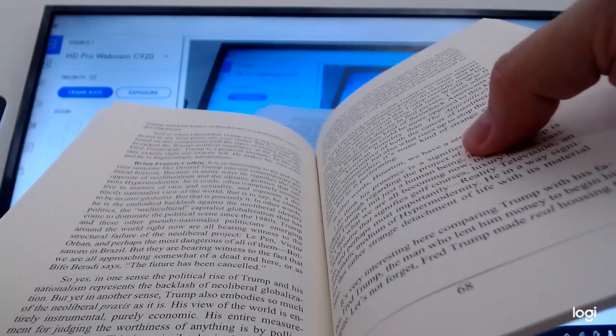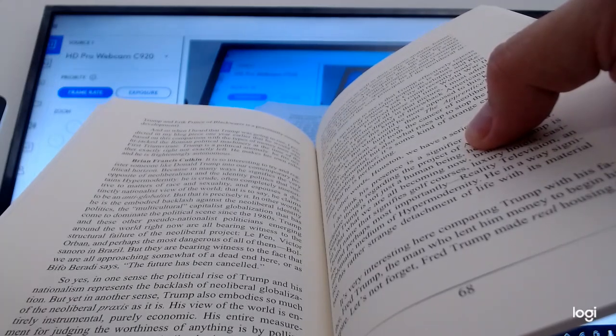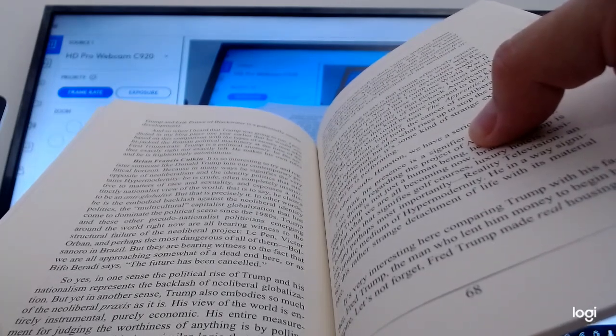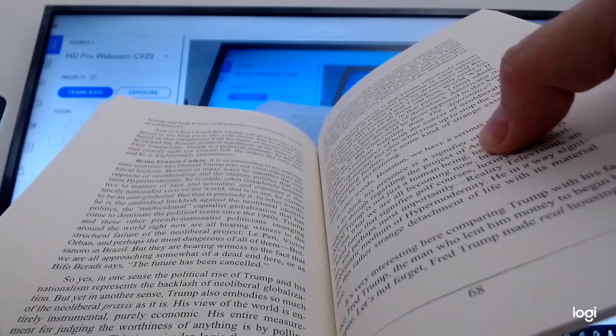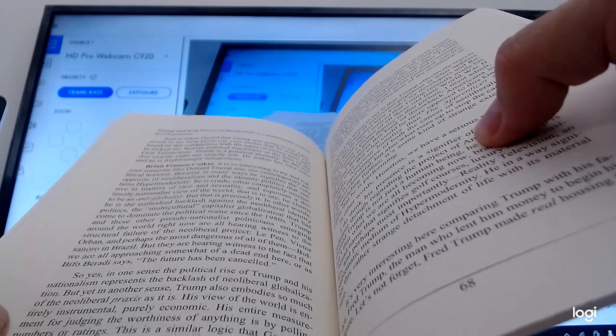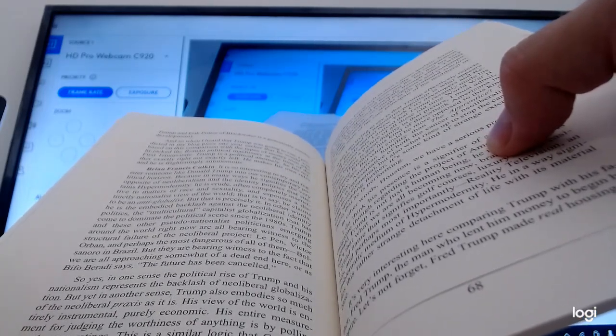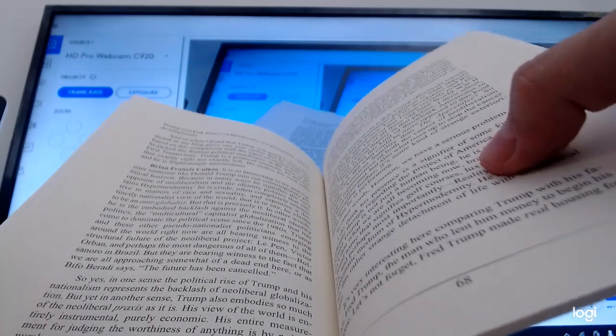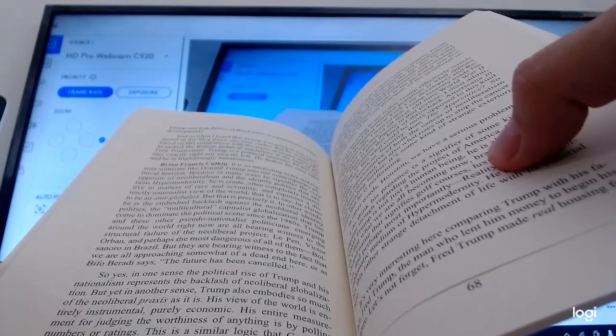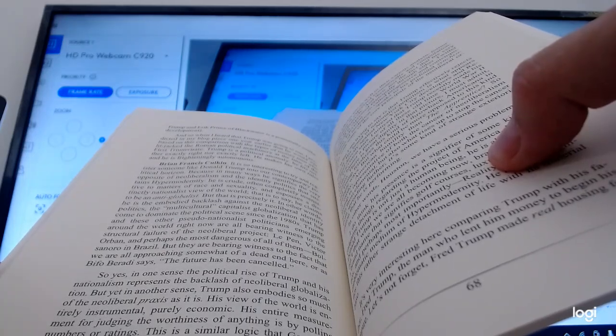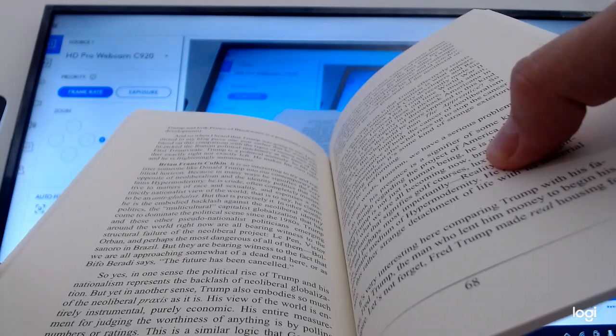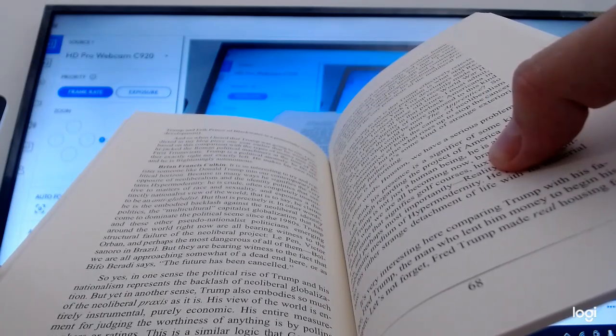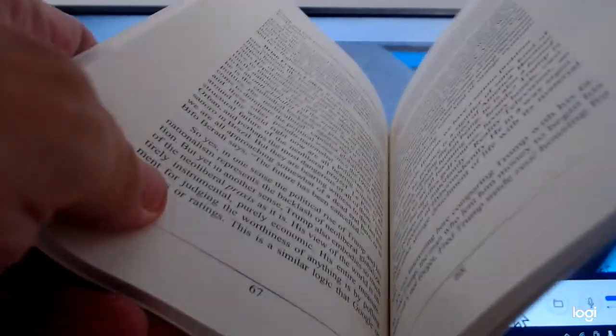Trump is a political anomaly. He fits neither exactly right nor exactly left. He makes his own rules, and he is frighteningly autonomous. Culkin: It is so interesting to try and register someone like Donald Trump into our contemporary political horizon because in many ways he signifies the very opposite of neoliberalism and the identity politics that sustains hypermodernity. He is crude, often completely insensitive to matters of race and sexuality, and espouses a distinctly nationalist view of the world. He claims to be an anti-globalist. But that is precisely it—he has the embodied backlash against the neoliberal identity politics.